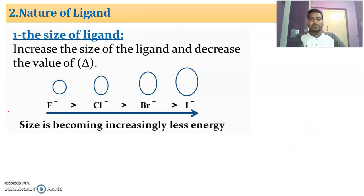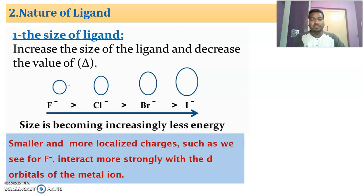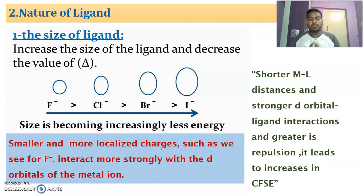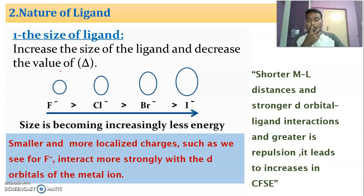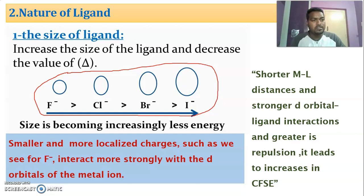The CFSE value of various metal ions varies in this way, and platinum +4 possesses the highest CFSE value because of the highest oxidation state. Next, nature of ligand. Fluorine is a strong ligand — this shows the variation in size of the ligand. Increasing the size of the ligand decreases the value of delta naught. Smaller, more localized charges such as F⁻ interact more strongly with the d orbital of the central metal ion.